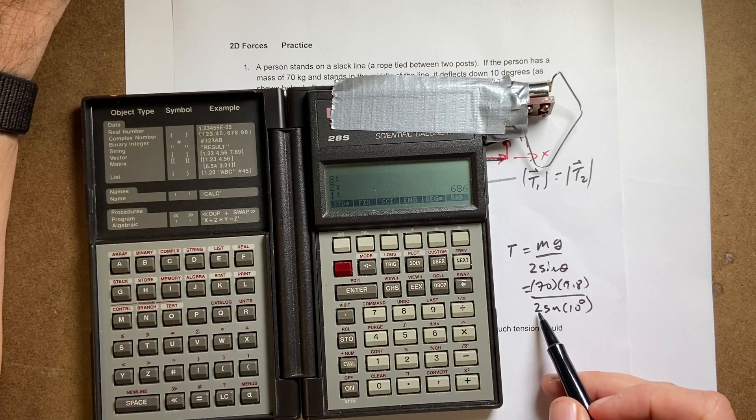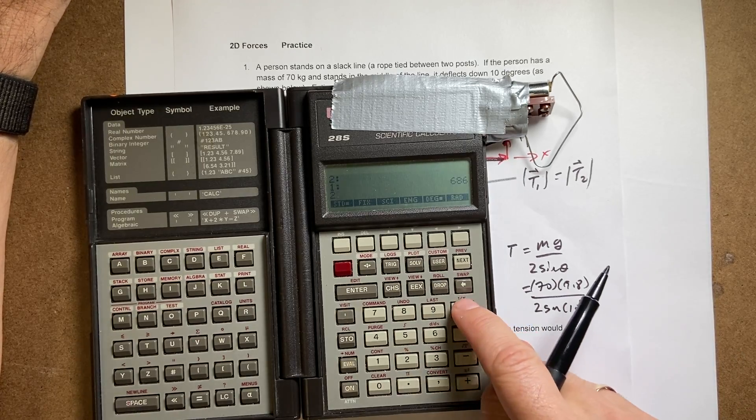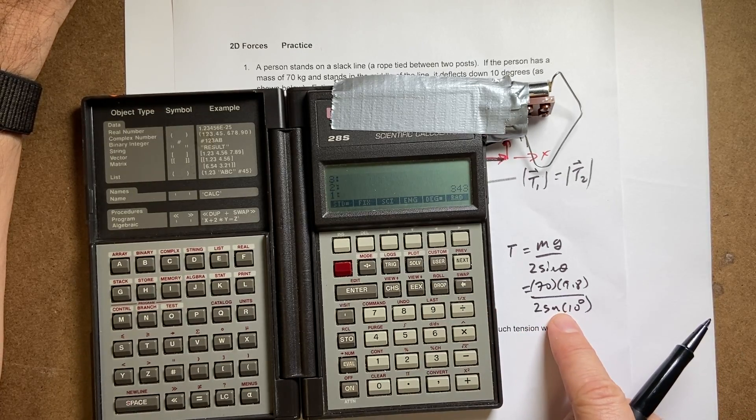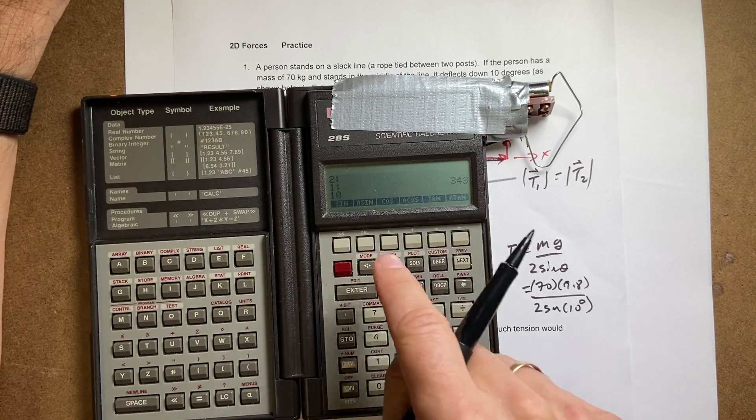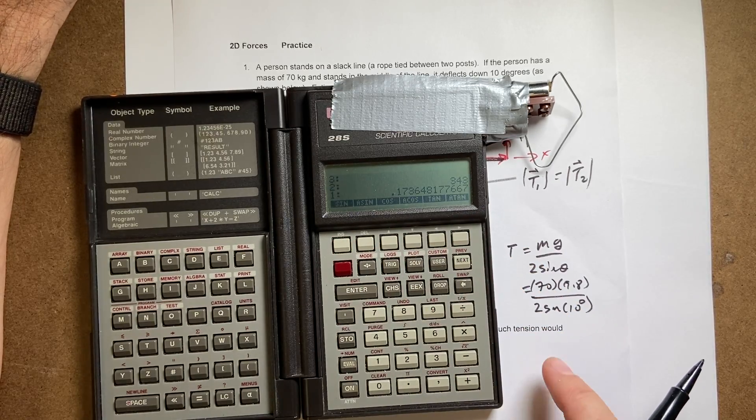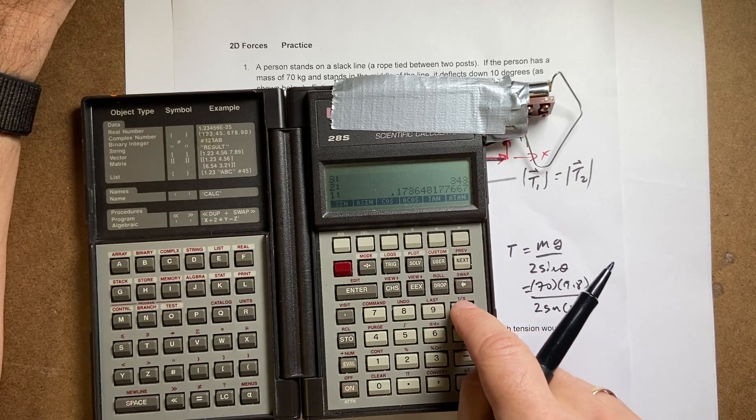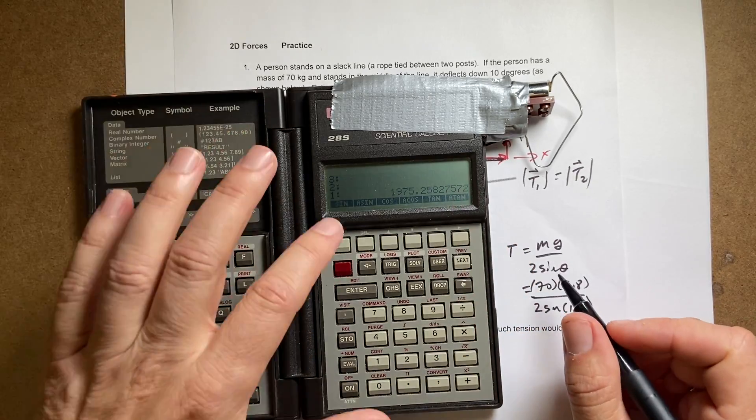That's that part right there. Now I'm going to divide by 2. So say 2 divided by. Now I need to take the sine of 10. So I'm going to say 10 and then I'm going to switch to trig mode and say sine. I already have it in radians. That's sine of 10. Now I'm going to divide that by sine of 10 and I get this.